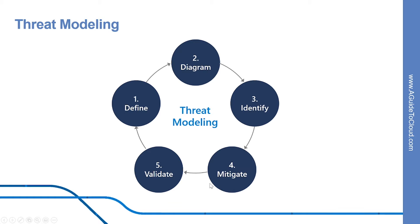There are five major threat modeling steps: defining security requirements, creating an application diagram, identifying threats, mitigating threats, and validating that threats have been mitigated. Threat modeling should be part of your routine development lifecycle, enabling you to progressively refine your threat models and further reduce risk. The Microsoft Threat Modeling tool makes threat modeling easier for all developers through a standard notation for visualizing system components, data flows, and security boundaries.